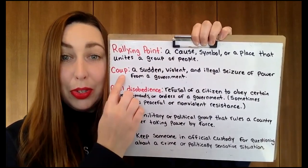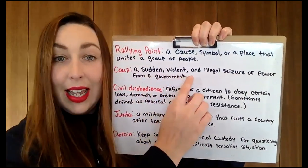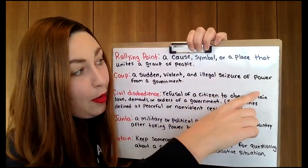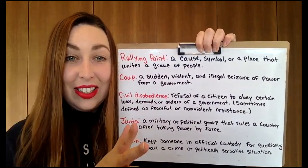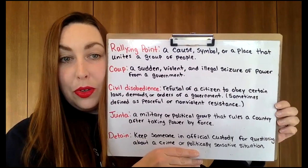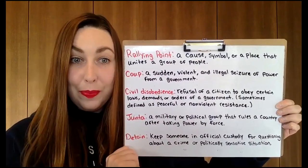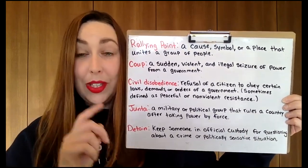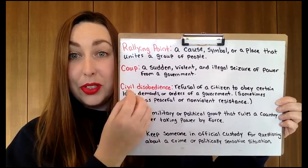The next word is 'coup.' Remember the P is silent — coup. A coup is a sudden, violent, and illegal seizure of power from a government. So when someone or a group of people try to take the government, that would be considered a coup. If you have been following my lessons, we also had a lesson about the attempted coup in the United States. Coup has been coming up a lot recently in the news, so it's a good word to know.